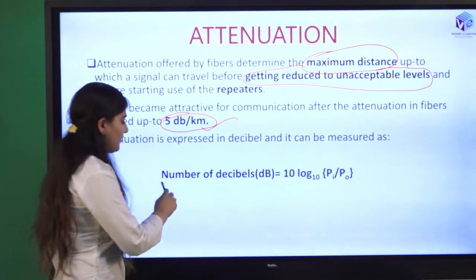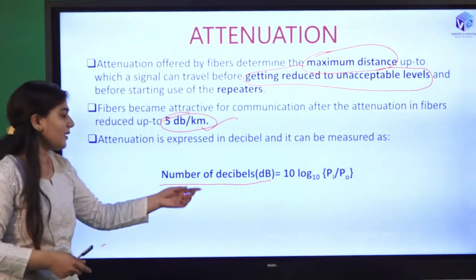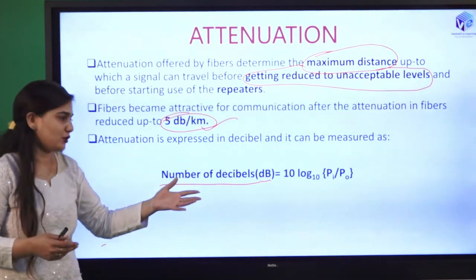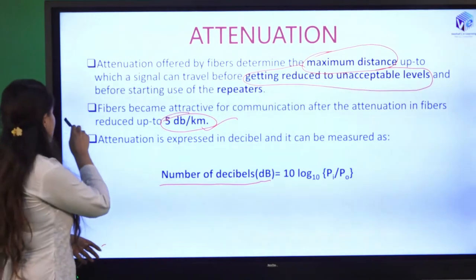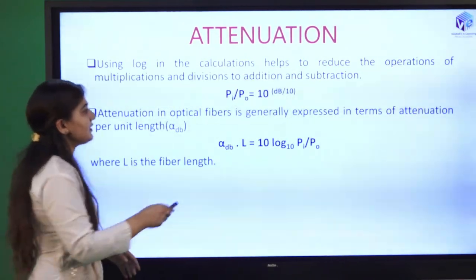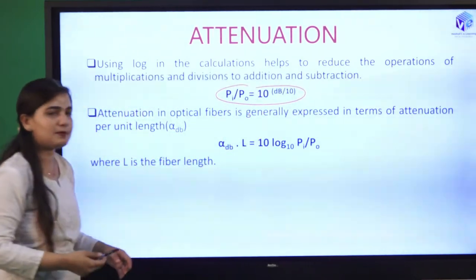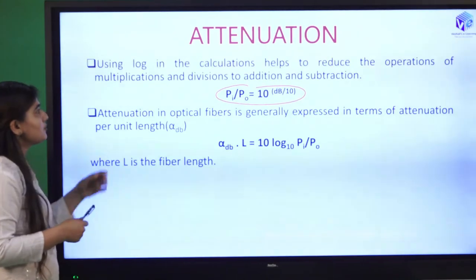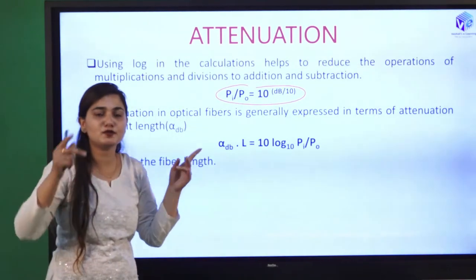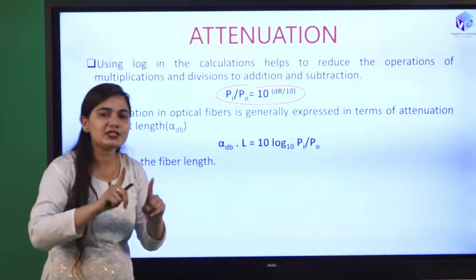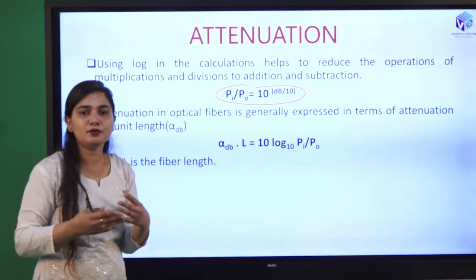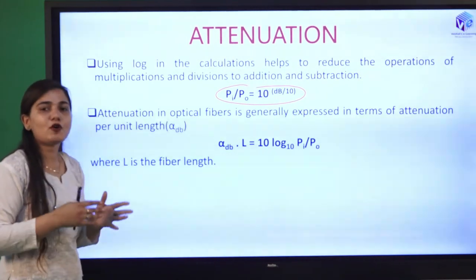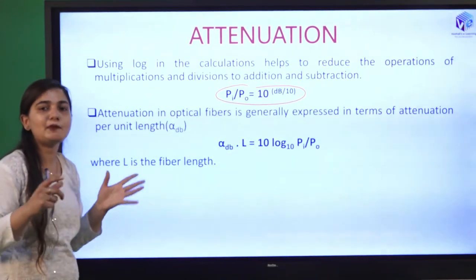Attenuation is expressed in decibels. The formula is: attenuation in dB = 10 × log₁₀(P_in / P_out), where P_in is the power input and P_out is the power output. We can rearrange this as P_in / P_out = 10^(dB/10). Using logarithms in the calculation helps reduce complexity — multiplication becomes addition, and division becomes subtraction, which is easier to handle at the signal level. This is the reason we use logarithms.